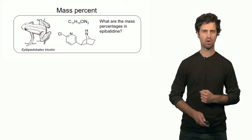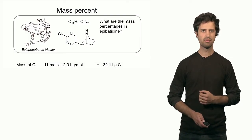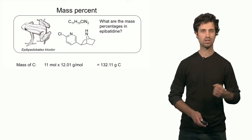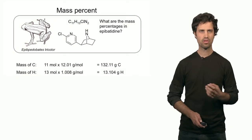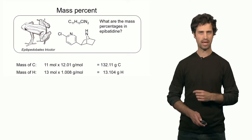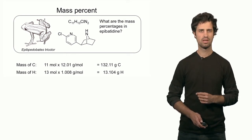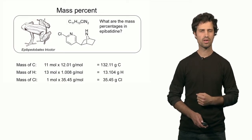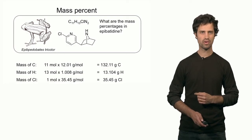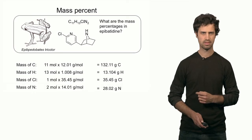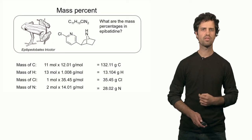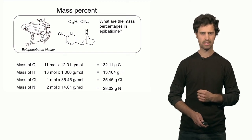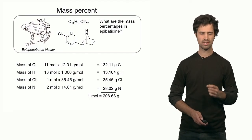The first step is to calculate the molar mass. There are 11 moles of carbon per mole of the compound: 11 times the molar mass of carbon gives 132 grams. There are 13 moles of hydrogen, giving approximately 13 grams. There is 1 mole of chlorine, contributing 35.45 grams. There are 2 moles of nitrogen: 2 times the molar mass of nitrogen gives approximately 28 grams. Adding all these numbers gives a total molar mass of 208.68 grams per mole for epibatidine.